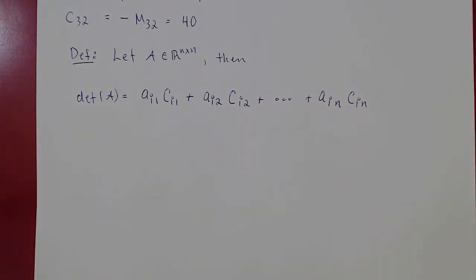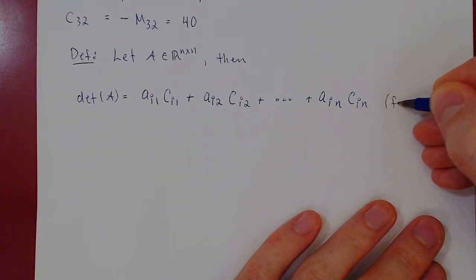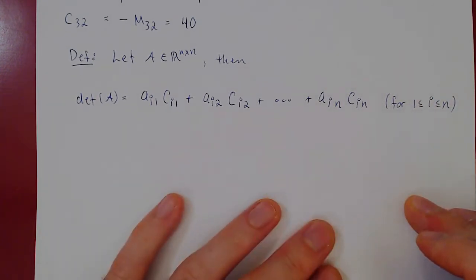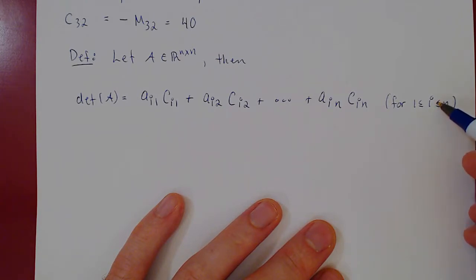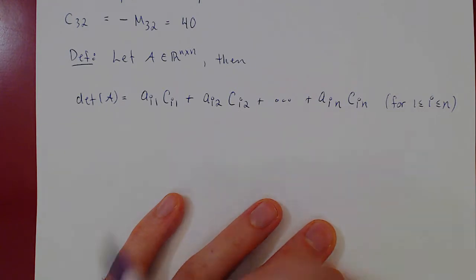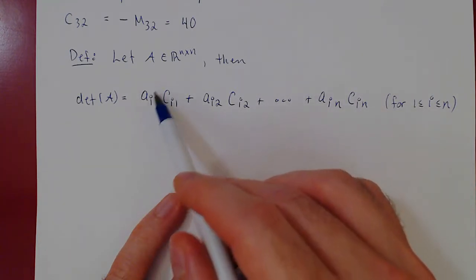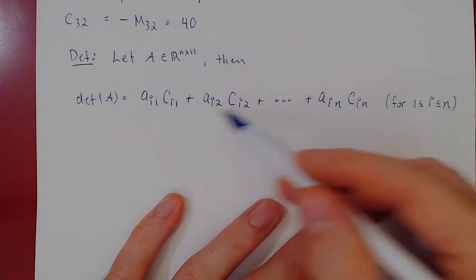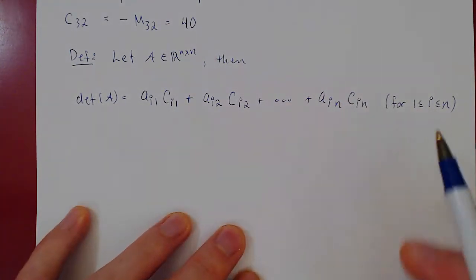What's remarkable is that it doesn't matter which row you choose — you will always get the same value. Since we have an N by N matrix, i can be anything from 1 to N. If you multiply each entry of the chosen row by the corresponding cofactor and sum those up, you have the determinant.